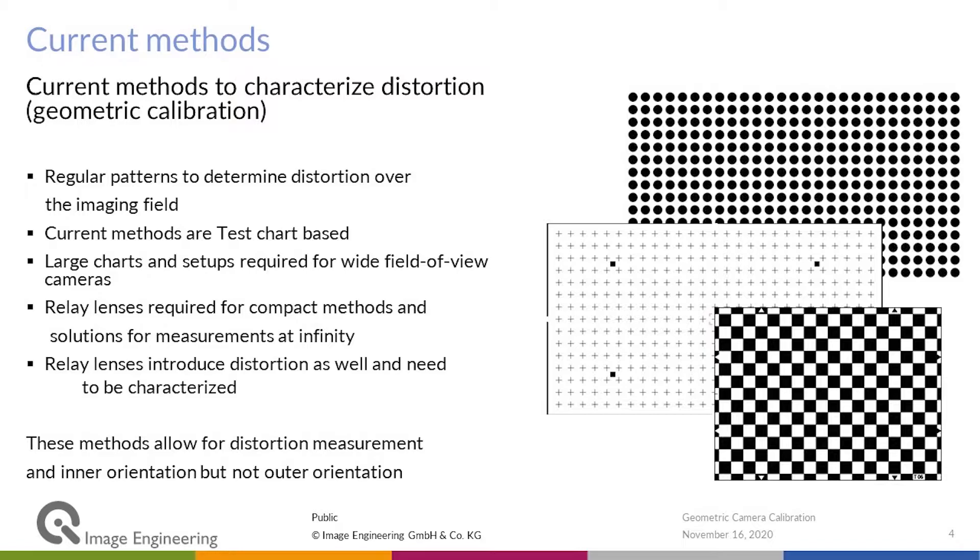If you want to do this at infinity, you may want to use a relay lens, but that relay lens also introduces distortion and needs to be characterized to eliminate it from the measurements.